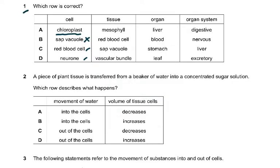The answer to question one was D: a neuron is a cell, a vascular bundle is a tissue (made up of xylem and phloem), a leaf is an organ in a plant (made up of many tissues), and an excretory system is an organ system. Liver is an organ, not an organ system. We must differentiate between cell, tissue, organ, and organ system.